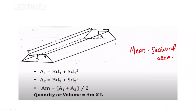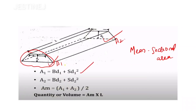The next method is the mean sectional area method. Here, you calculate the area at each end individually: A1 = bd1 + sd1² and A2 = bd2 + sd2². Then you take the average area as (A1 + A2) / 2, and the total volume equals average area multiplied by total length.